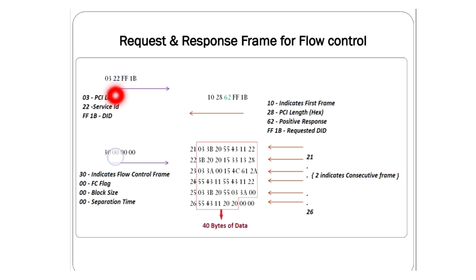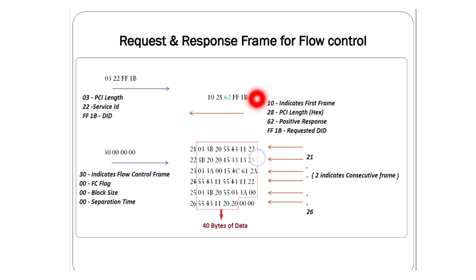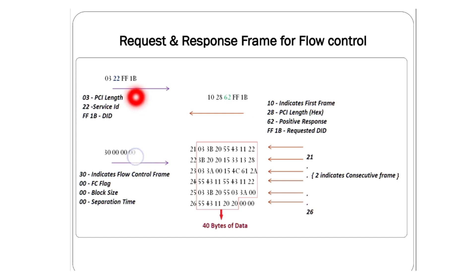22 is the service ID for Read Data By Identifier, and FF1B is the DID (data identifier). This is the request we are sending as a tester. The response from the ECU is 10 28 62 FF 1B. If you decode this: 62 is the positive response for service 22, and FF1B is the same data identifier we requested — those three bytes are clear.